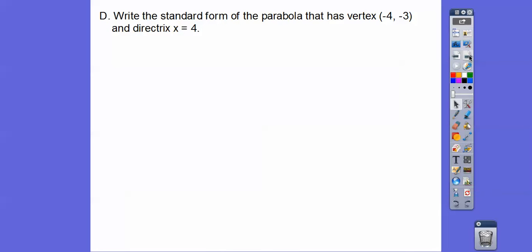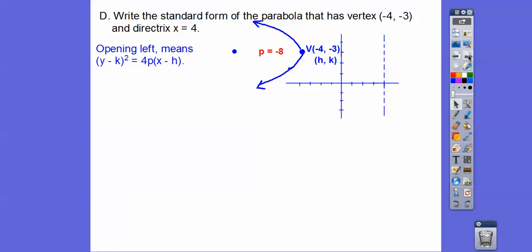All right, so let's write the standard form of the parabola that has that vertex and that directrix. You've got to graph them. Here's x equals 4. Here's the vertex right there. So if the vertex is right there, which is in the middle, the focus is over there, that means it opens to the left. So when it opens left or right, y is squared. So y minus k squared equals 4p times x minus h. There's p, there's h, k. So substituting all that in, we get that, and we get that.